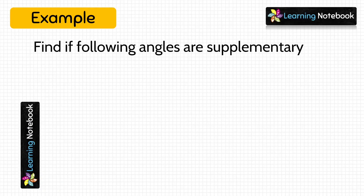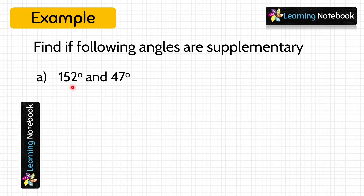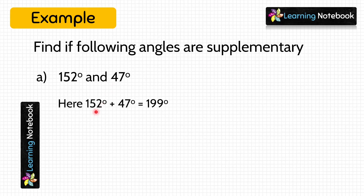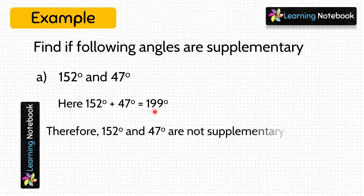Let's see the next question. Find if the following angles are supplementary. In the first part, we are given two angles: 152 degrees and 47 degrees. We have to check if they are supplementary or not. We will add both these angles and check if their sum equals 180 degrees. So, 152 degrees plus 47 degrees equals 199 degrees. Since the sum of their measures is not equal to 180 degrees, these angles are not supplementary angles.